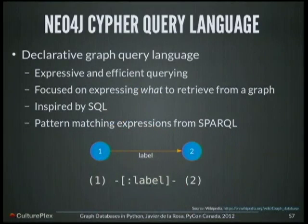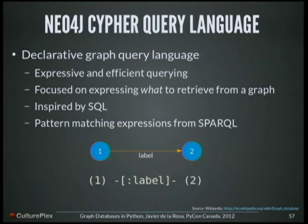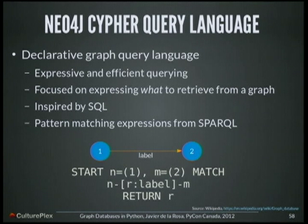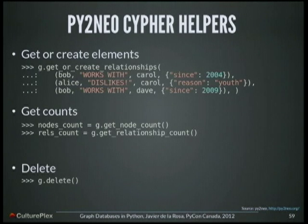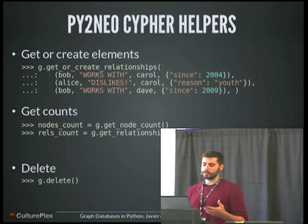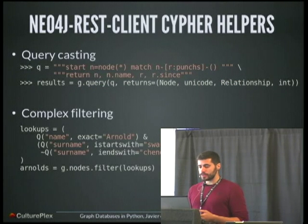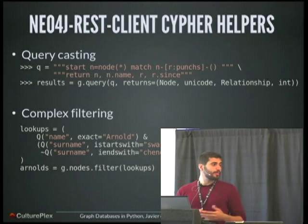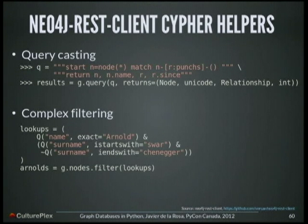You define a pattern and then the language does everything for you. When you want to look for a pattern — node1 related to node2 using a label — you can see the Cypher syntax behind it. It's really similar to how a graph looks in real life, and this is the syntax of a real query. Py2neo is using Cypher helpers to make functions not included in the APIs themselves — for example, to get or create elements, to get count of nodes and relationships, and also to delete elements. In Neo4j REST Client, I am using Cypher to make complex filtering in a really Django-style way. And if you want to do a Cypher query, you can also use it like a casting to return pure Python objects.